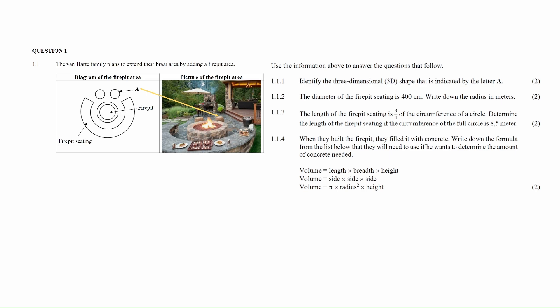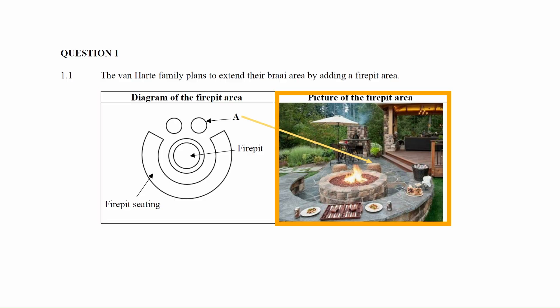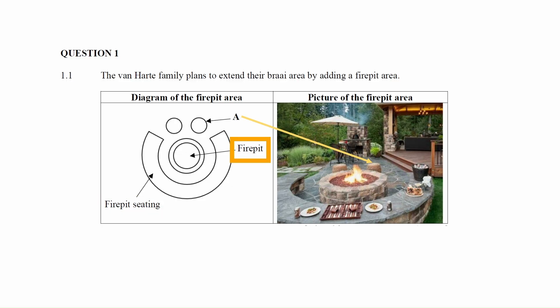Question 1.1 consists of four measurement questions designed to assist your understanding of circular and cylindrical shapes in the context of building designs. You are given a context where the Van Harte family plans to extend their braai area by adding a fire pit area. You are given a diagram and a picture of the fire pit area. The diagram shows the fire pit seating and fire pit.